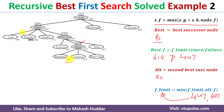This is how we apply the Recursive Best First Search (RBFS) algorithm on a given graph to find an optimal path from the initial node to the goal node. I hope the concept of RBFS is clear.